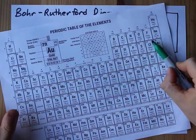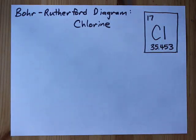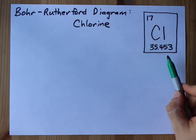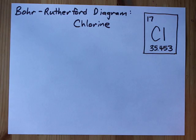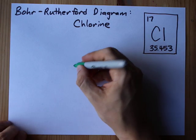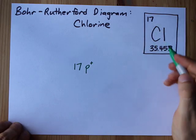On my periodic table, chlorine is the 17th element. The atomic number is 17 and my mass number is about 35. I'm going to round this to the nearest whole number. The atomic number is 17. That's the number of protons and I'm going to write that in the very center of my diagram.